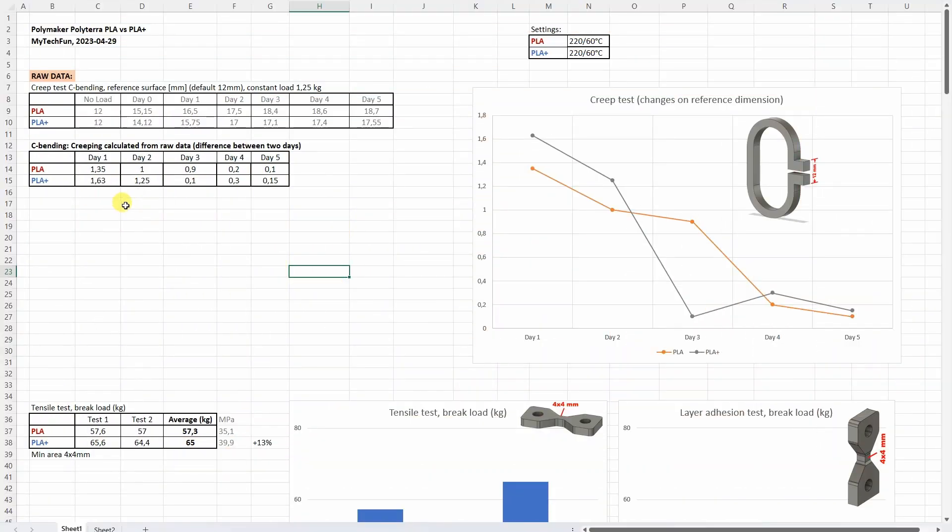And it's time to analyze the results. And I will start with the creep test. And we have this raw data, the distance between two reference surfaces. But what we need is the creeping, the difference between two days. And that's what we can see in this table which is presented on this graph. Zero means no creeping but these are also very small values. So what can we see here is that PLA started creeping on the third day, and PLA Plus only on the fourth day.